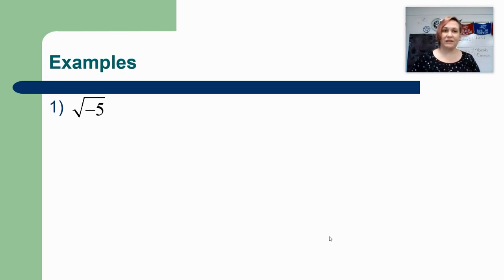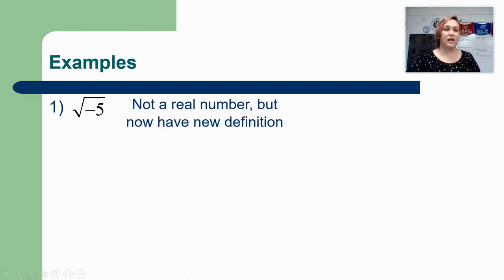So in this problem technically the square root of negative 5 can be rewritten as the square root of negative 1 times 5. Right, negative 5 can be rewritten as negative 1 times positive 5.